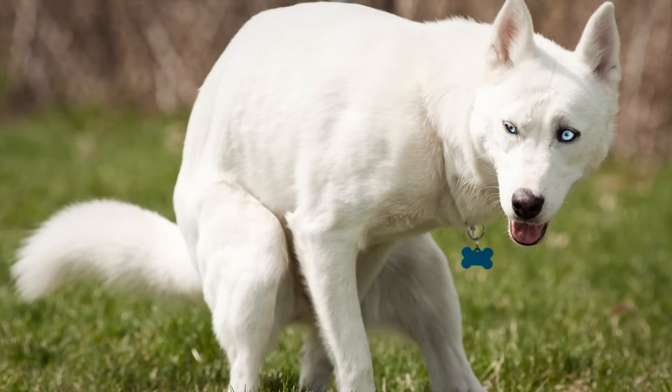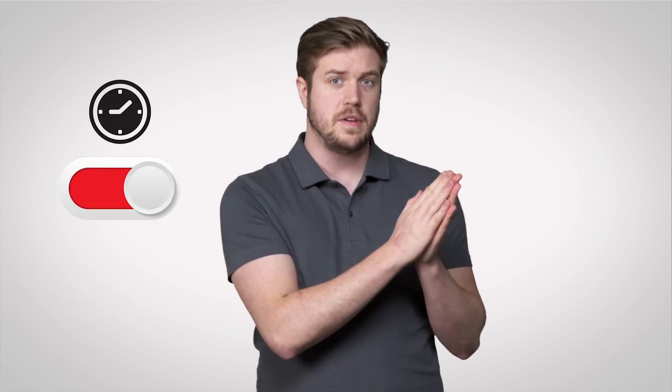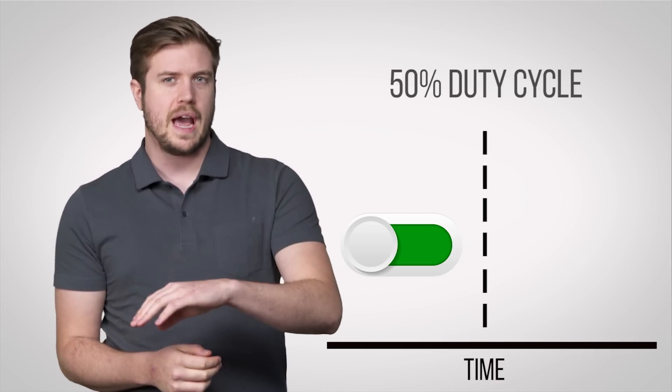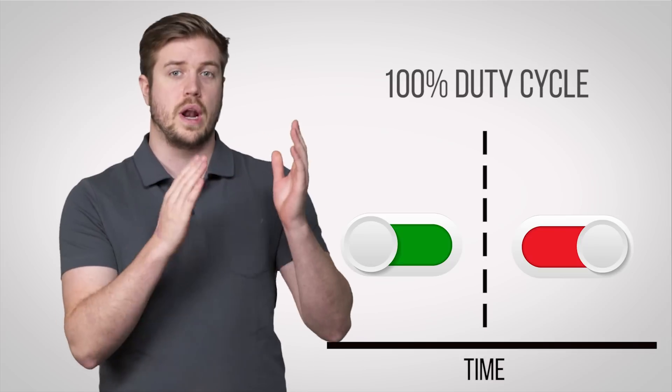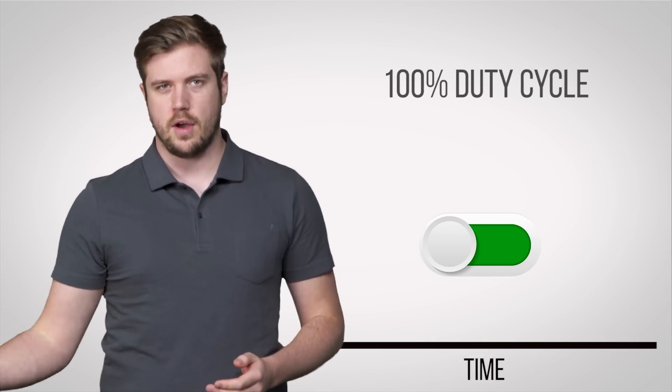Now the duty cycle isn't the time it takes your dog to spin around before going about its business, but instead how long the signal is turned on versus turned off. This means with the duty cycle of 50%, the signal is turned on half the time and off the other half. Whereas a duty cycle of 100% means the signal is always on.